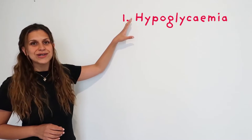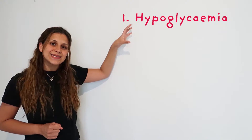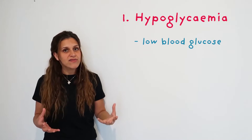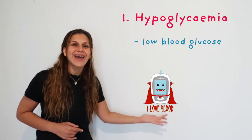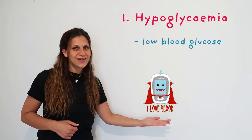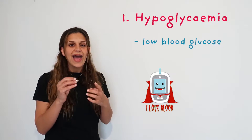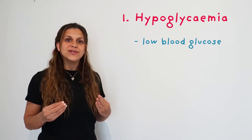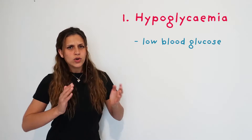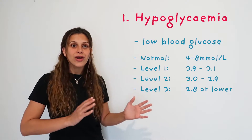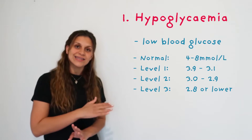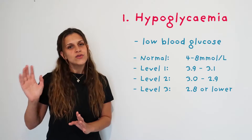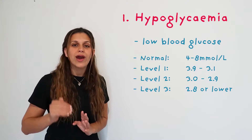The first one: hypoglycemia. Hypoglycemia is basically a very low blood glucose level. To check blood glucose, we use a blood glucose monitor — you prick the patient, get some blood, and from that you can tell the patient's blood glucose level. Our normal level is anywhere between 4 to 8 millimoles per liter. Anything more than that is too high, anything less is too low.